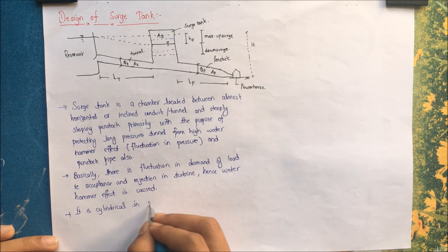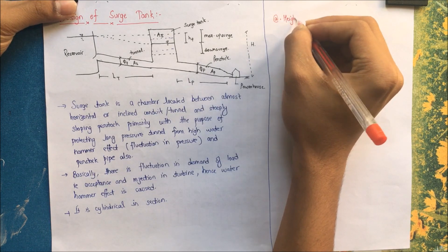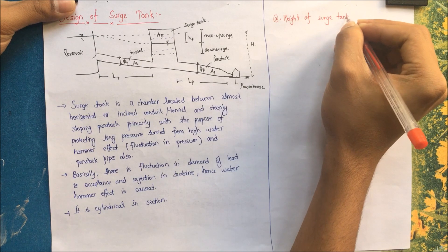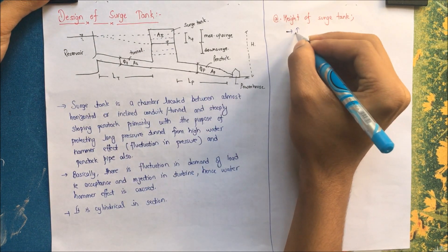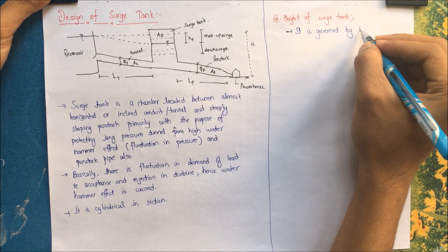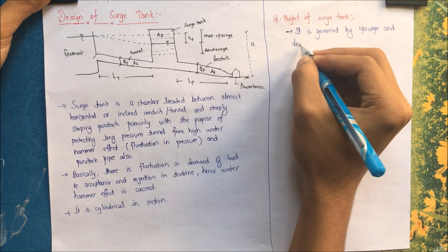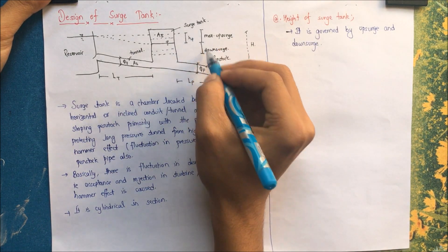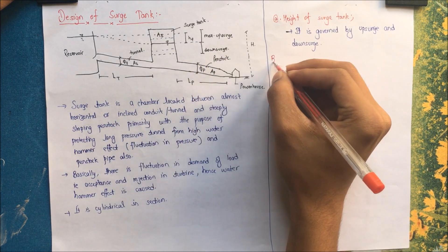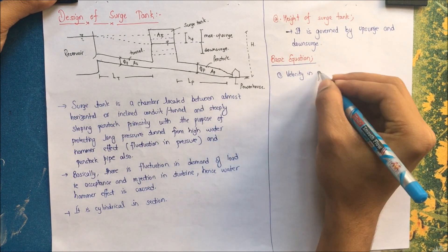Now let us go to the design process. First, the height of the surge tank is governed by the upsurge and downsurge — that is, the fluctuation of water in the surge tank — which also depends upon the fluctuation of load. The basic formula we have to consider first is the velocity in the penstock.